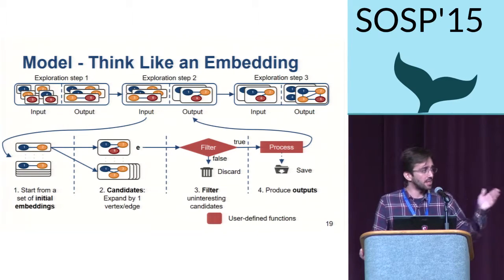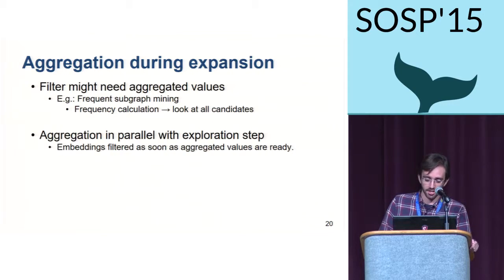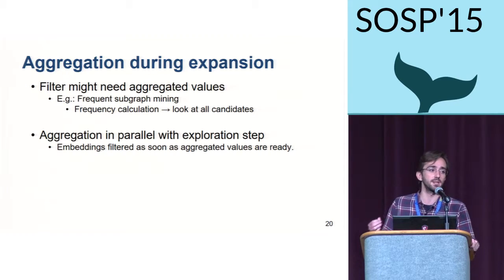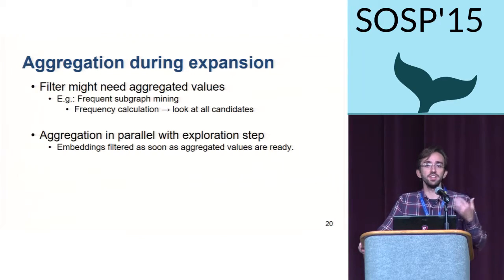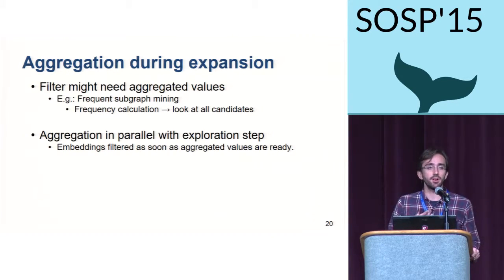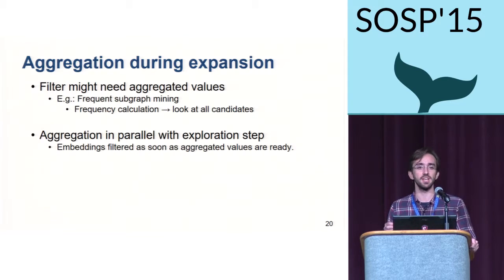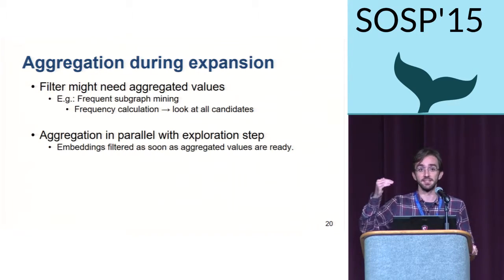Although this model is simple, it can implement a large variety of graph mining algorithms. However, some algorithms cannot make filtering decisions based on a single subgraph alone. For instance, in frequent subgraph mining, we are interested in discarding all subgraphs whose frequency is not above a certain predefined threshold. But calculating the frequency requires looking at all candidates of the same size first. To accommodate these algorithms, Arabesque supports the execution of an aggregation in parallel with an exploration step. Once the aggregation is complete and aggregated values are ready, we can use them to filter candidates before they are expanded in the next exploration step.